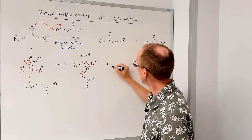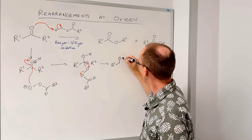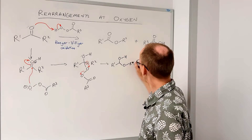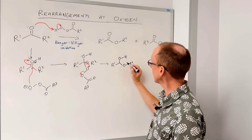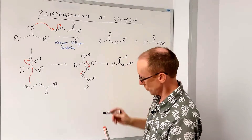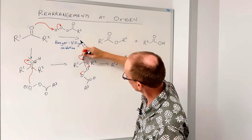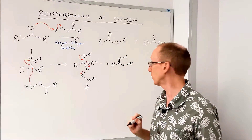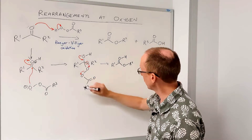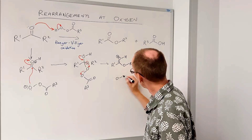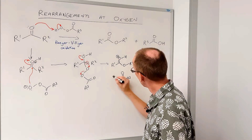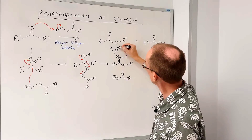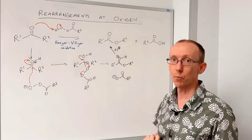If you follow those curly arrows, you end up with a species — and we can assist by pushing some electron density in from that oxygen, so we end up with a protonated ester group, and our leaving group was this carboxylate. To get from this to the product is just a simple proton transfer, loss of H+, and we end up with the product ester.